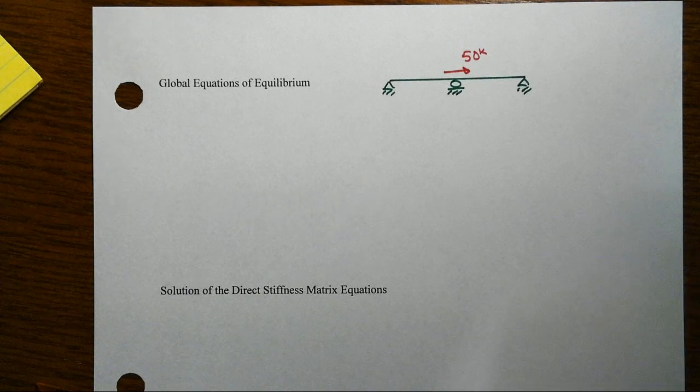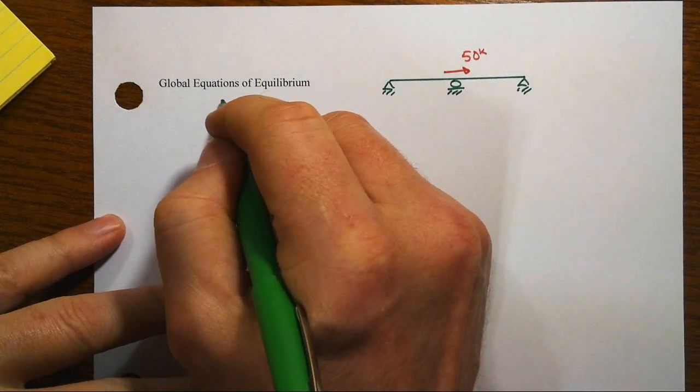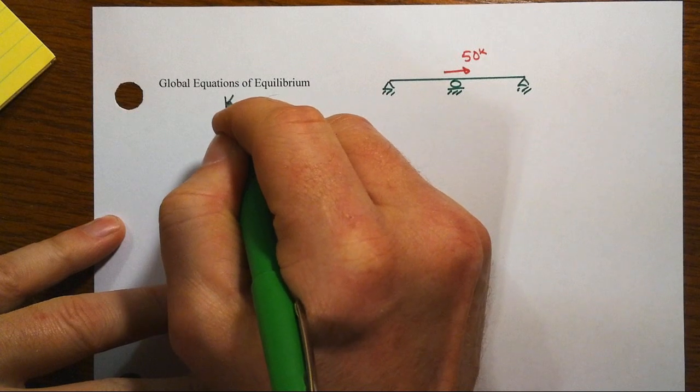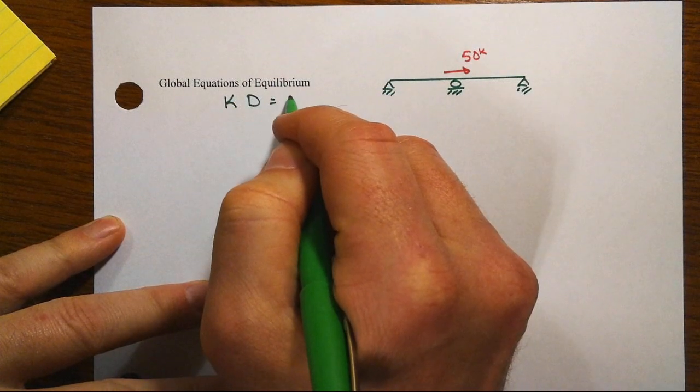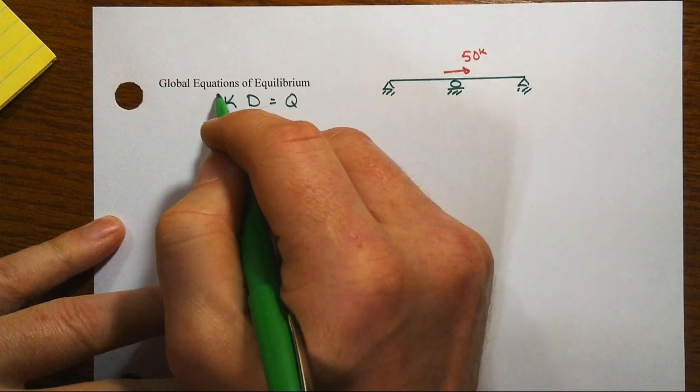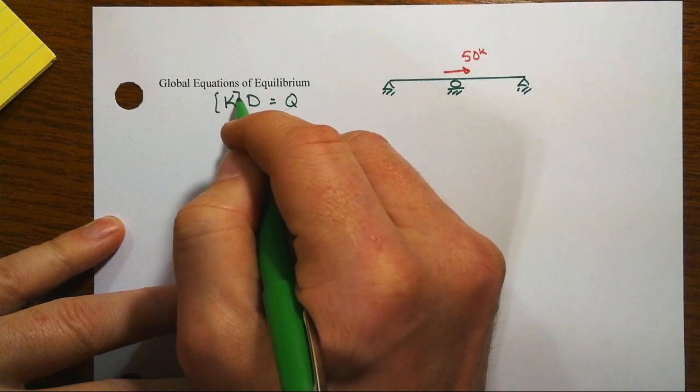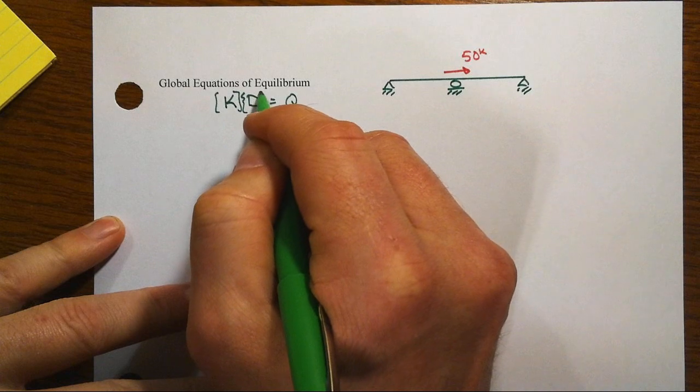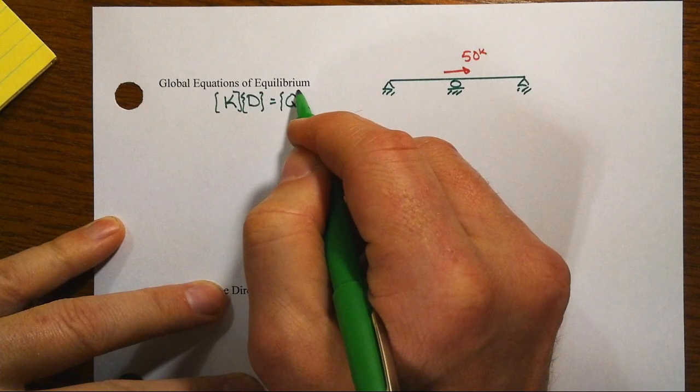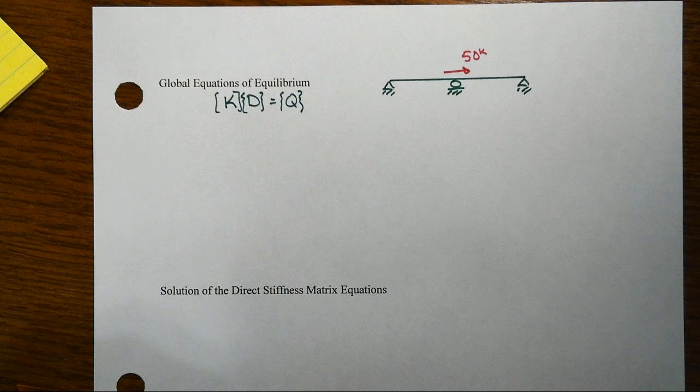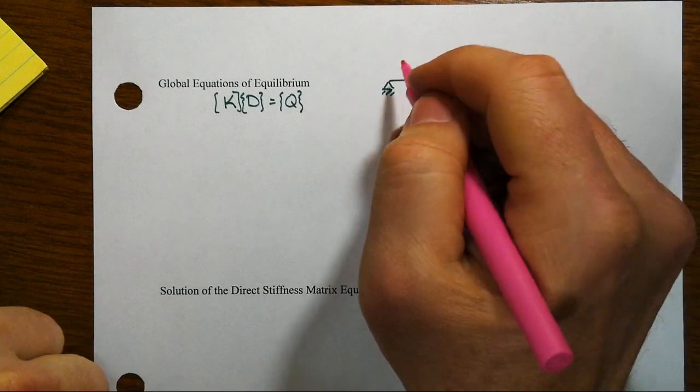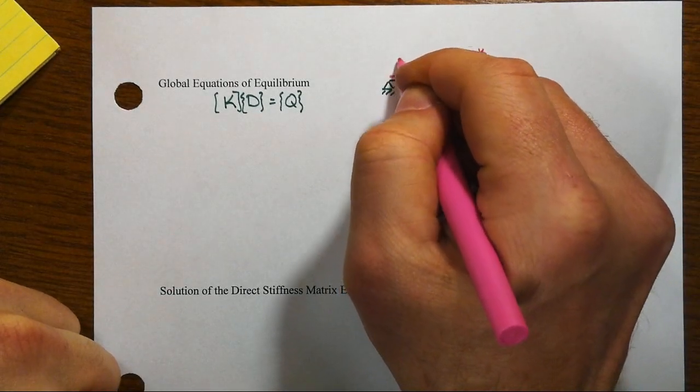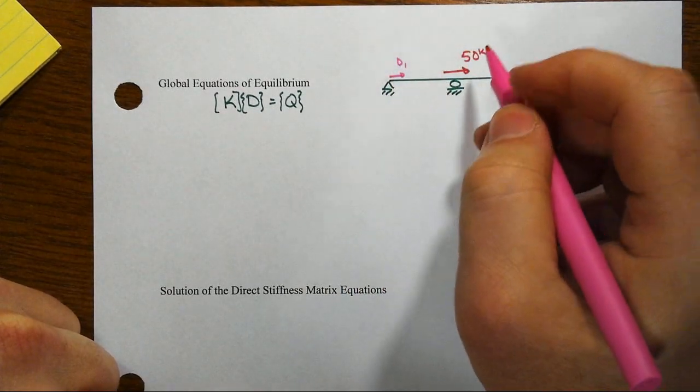From the global perspective, K[D] equals {Q}. This is a series of equations where the unknowns are the member end displacements. We've chosen to model the system at only three locations.